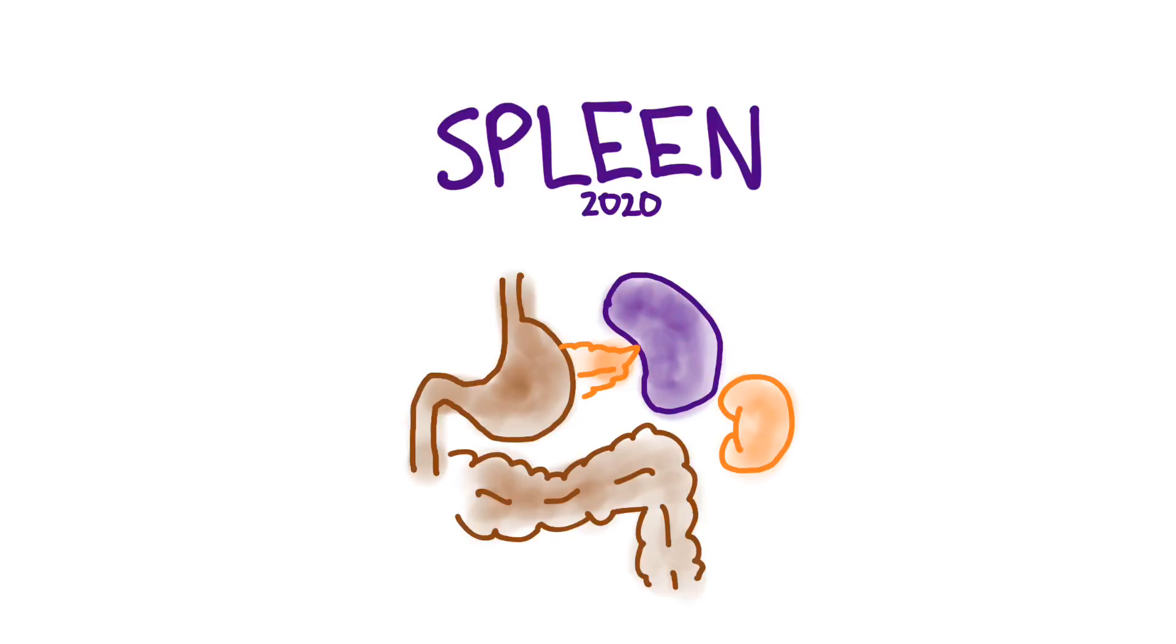It sits right in the peritoneum next to the pancreas, next to the kidney. The stomach is nearby as well as the colon, and this is of course called the splenic flexure. The spleen is about 1 inch thick, it's about 3 inches wide, and about 5 inches tall. It weighs about 7 ounces and it is located between the 9th through the 11th ribs.